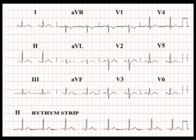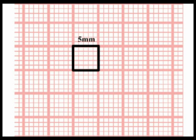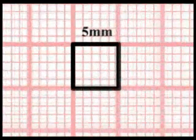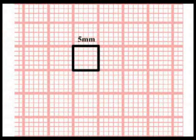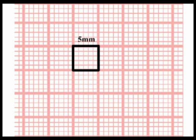ECG recording paper is divided into large squares 5 mm wide, and these large squares are in turn further subdivided into small squares each of 1 mm in width. We can consider that in all ECG machines the recording needles run at a constant speed over the ECG paper of 25 mm per second. This means that distance on the ECG paper equates to time.